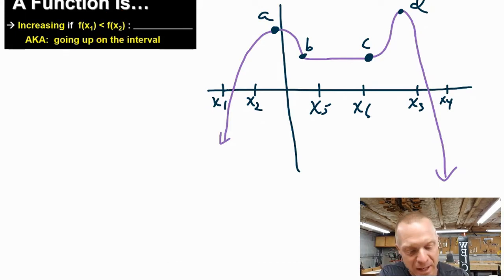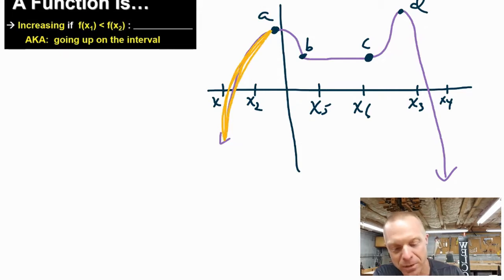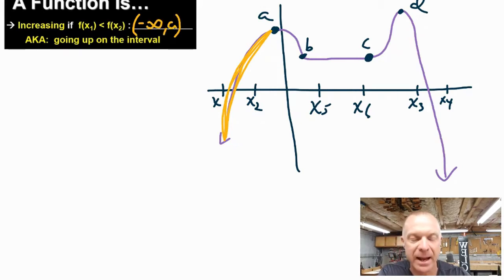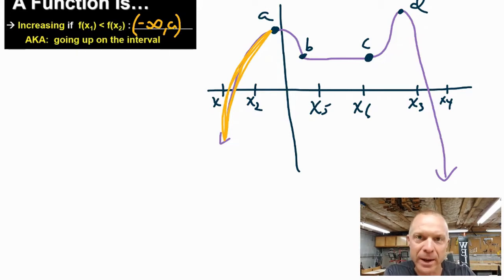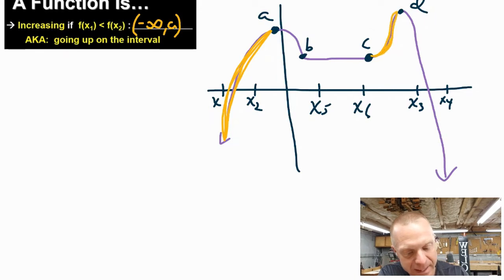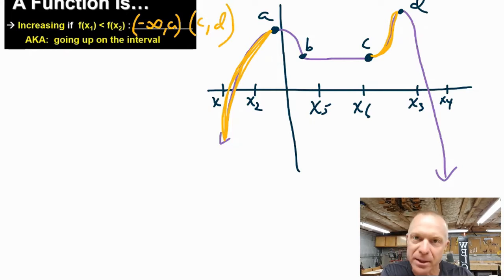That is actually happening everywhere in this interval, and you would be able to denote that interval as negative infinity all the way to a. Every y value in that interval is greater than the first. That's also happening over here between c and d, so that would be another interval where this function is increasing.